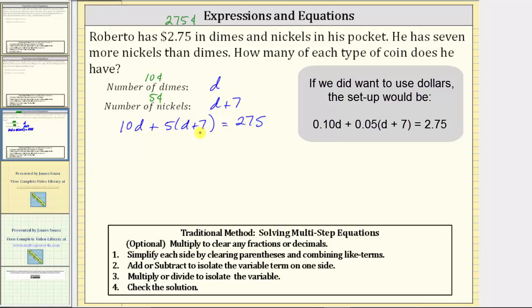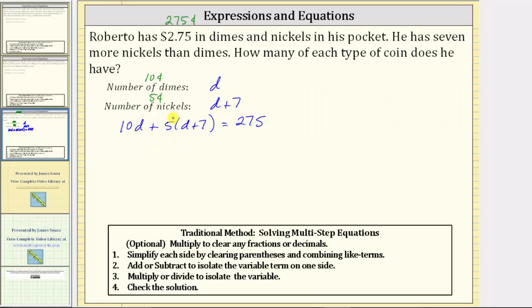To begin solving, we first simplify the left side of the equation by clearing parentheses and combining like terms. Which means we first distribute five here, which gives us 10d plus five times d is 5d plus five times 7 is 35 equals 275.